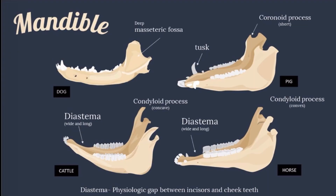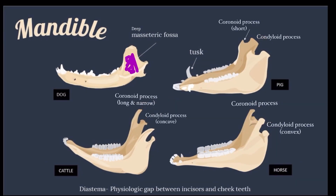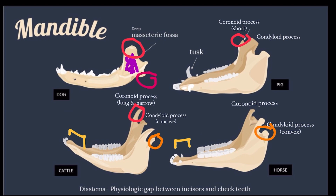Next is the mandible. The mandible is composed of two halves — there is a body and the ramus. In the dog, it has a deep masseteric fossa with angular process, short diastema, and long and wide coronoid process. In the cattle, it has a wide and long diastema, long and narrow coronoid process, and the head of the condyloid process is concave. The mandible of the pig has a short coronoid process almost the same height with the condyloid process, a massive body, and tusks that are continuously growing. In the horse, it has a wide and long diastema, and the head of the condyloid process is convex.